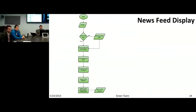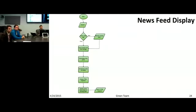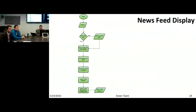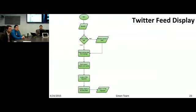The Twitter API rate limit is, I believe, a thousand requests every 15 minutes for the pre-development tier. We should not be anywhere near that limit. Twitter does move relatively quickly, so it's something we'll want to refresh more often than, say, a news feed where news articles are not necessarily posted billions of times per second like tweets are.